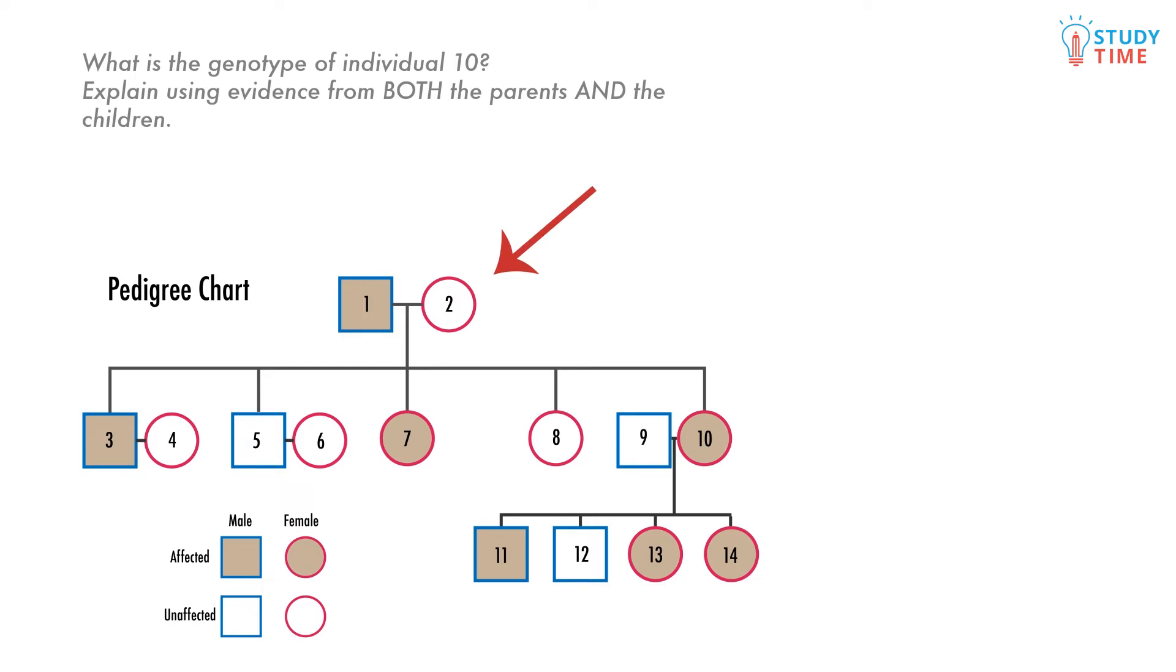Her mother is unaffected, and so the genotype here must be homozygous recessive. Thinking about Punnett squares, we can see that if her mother is homozygous recessive, then she must have a recessive allele from her mother in her genotype. So if individual 10 is affected, she must have at least one dominant allele, and from her mother she must also have at least one recessive allele. This means she must be heterozygous dominant.